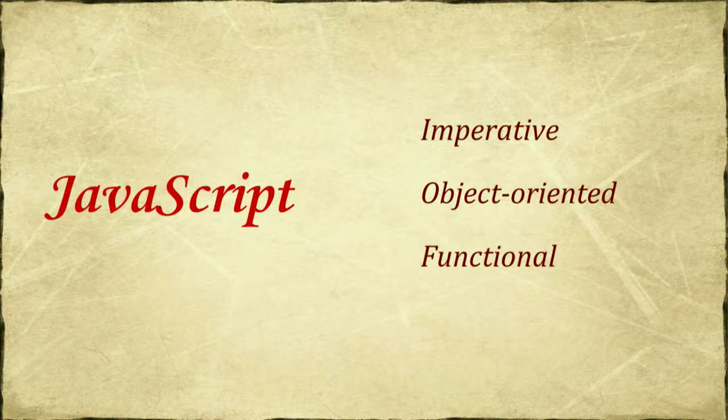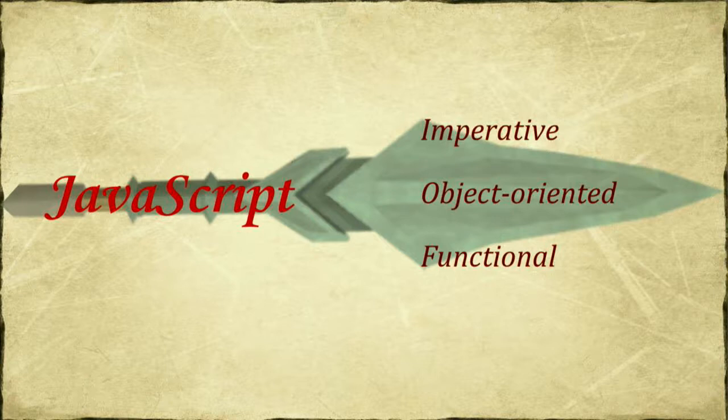So JavaScript — it can be imperative, object-oriented, functional. You choose what it will be. When combined, it's a really powerful tool. When separate, it's not so much. Why is it all so powerful? Because it can bring together people of different paradigms, of different thinking. Some of you know me as a diversity evangelist. This is why I love JavaScript — it's the most diverse language. It can bring together people of different mindsets, different thinking, different backgrounds. You can make it whatever you want, combine different themes, approaches, and architectures. It's really, really powerful.